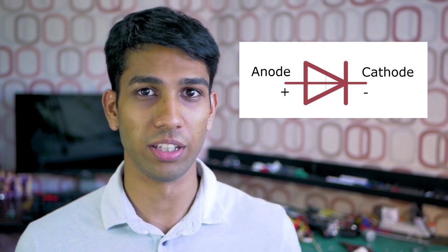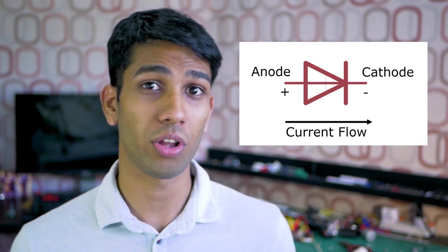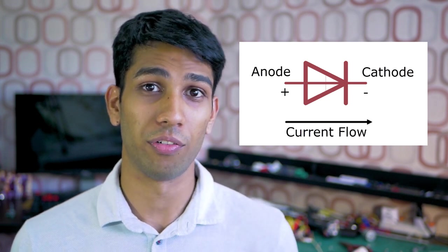Current flows in the direction of the triangle. That means it flows from the anode to the cathode. But do note this is conventional current flow, not the actual electron flow of electricity.